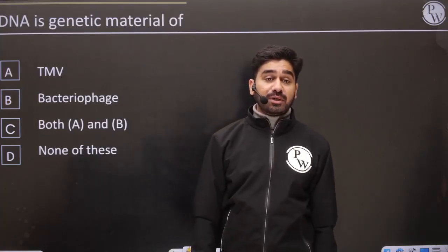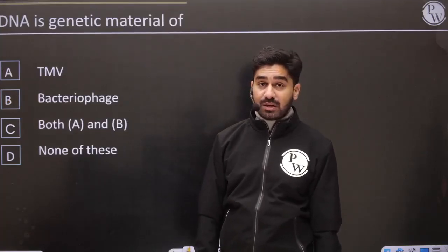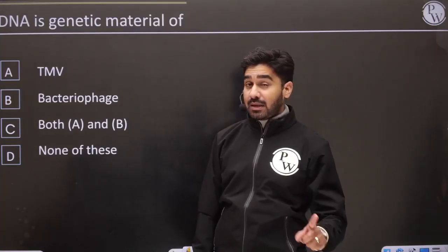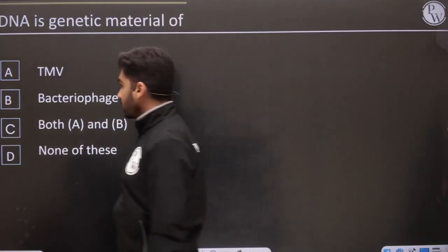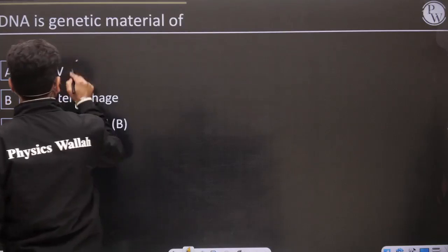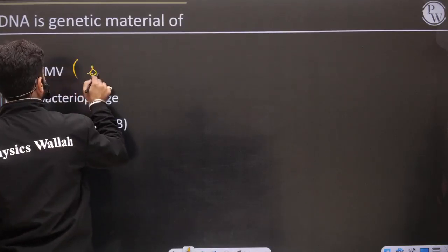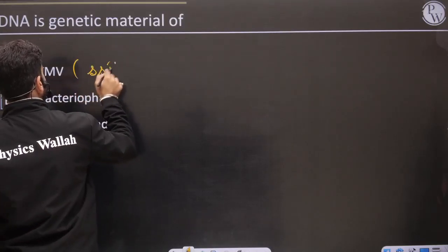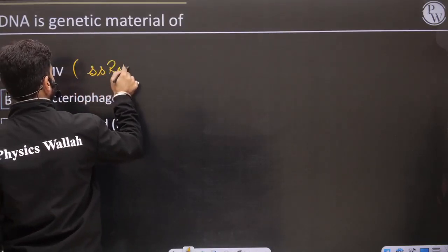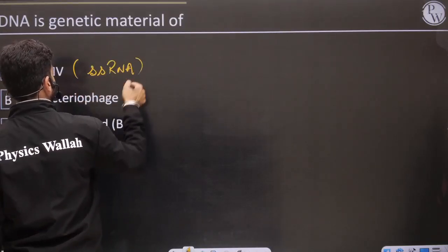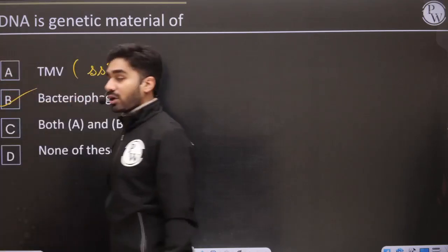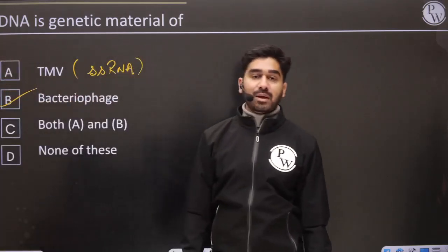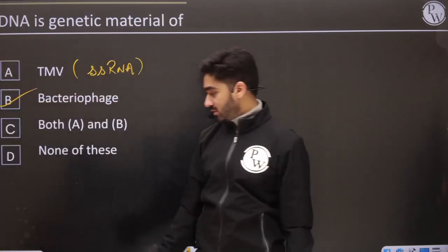DNA is the genetic material in which? In TMV (Tobacco Mosaic Virus), we studied that single-stranded RNA is the genetic material. So the correct option is bacteriophage — where DNA is the genetic material.